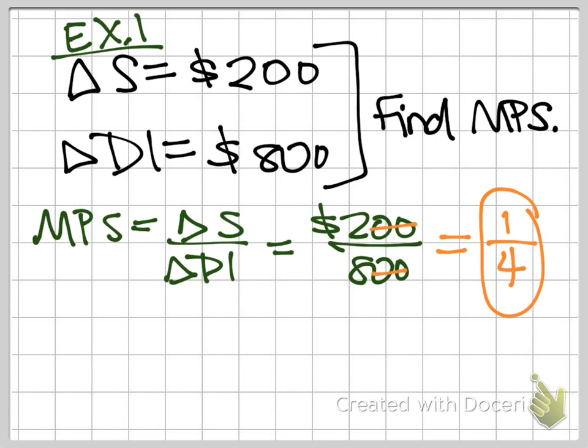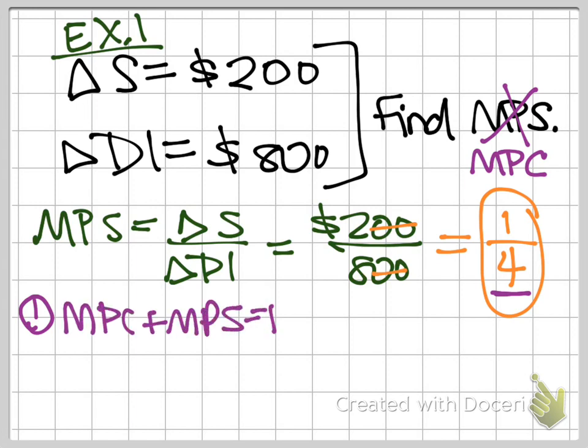Notice I could have made it a little more complicated though. Instead of asking you to tell me the MPS from the beginning, I could have asked you to find the MPC. You could have done it a couple of different ways. The first way is you could have done everything I've done so far, found this MPS of 1 fourth, and then using the equation MPC plus MPS equal 1, you would plug in your MPS of 1 fourth and find that our MPC is 3 fourths.